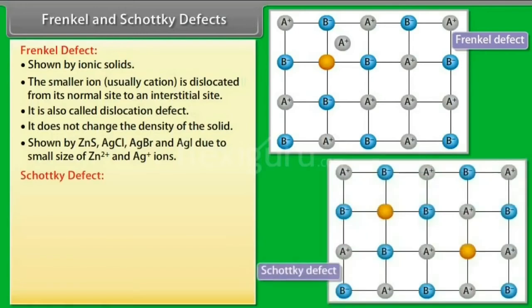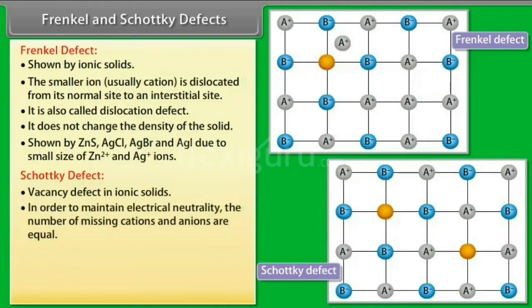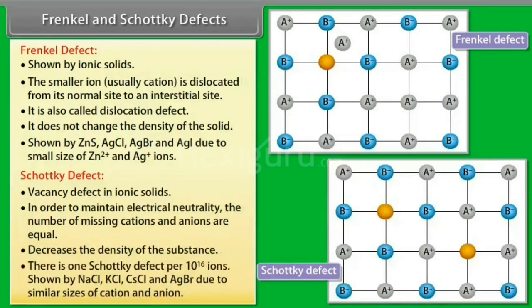Schottky Defect is a vacancy defect in ionic solids. In order to maintain electrical neutrality, the number of missing cations and anions are equal. It decreases the density of the substance. There is one Schottky Defect per 10¹⁶ ions.